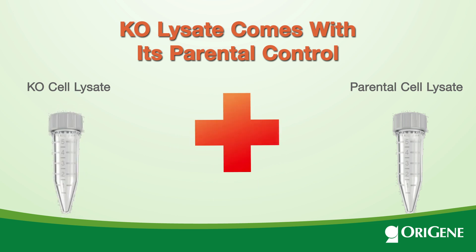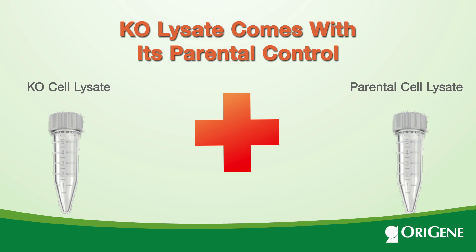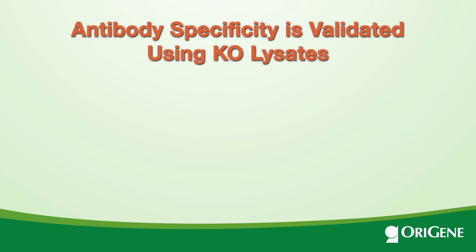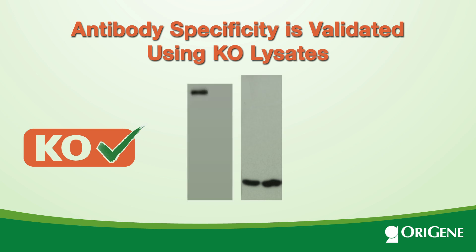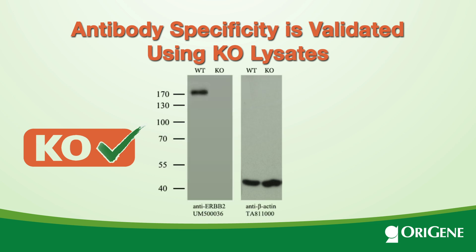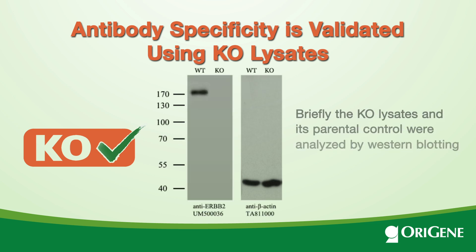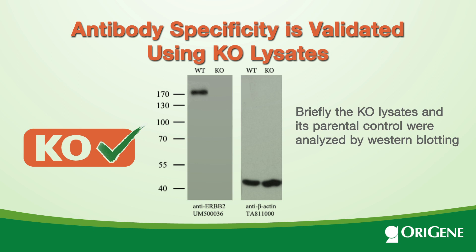Each KO cell lysate is supplied as a kit with two vials of lyophilized material — one is the KO lysate and the other is the parental cell lysate, serving as the perfect control. Using these KO lysate and parent lysate pairs, Origene has worked through our own monoclonal antibodies.